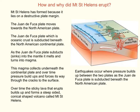Also at this plate margin, we can see that the two plates rub past each other. Pressure builds up between the two plates and friction, and this pressure eventually will be overcome. As the plates slip past each other, there are earthquakes. On May 18, 1980, this action at the plate boundary resulted in magma erupting to the surface and the volcano going off.